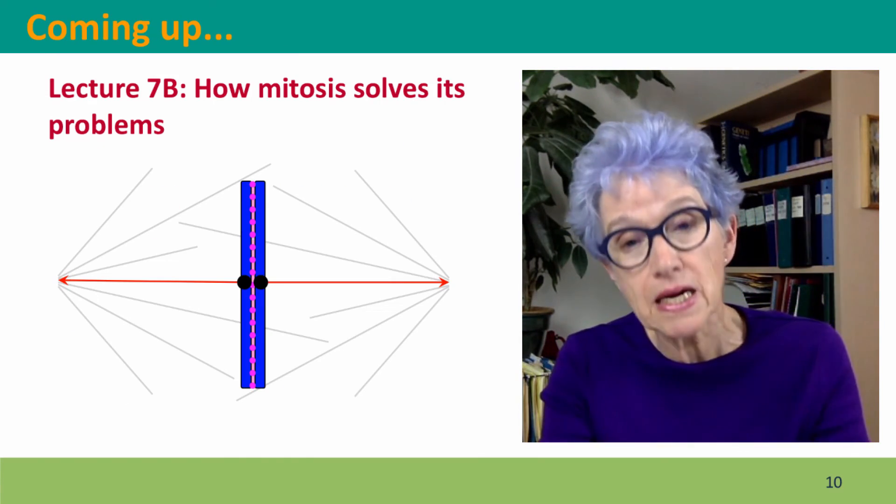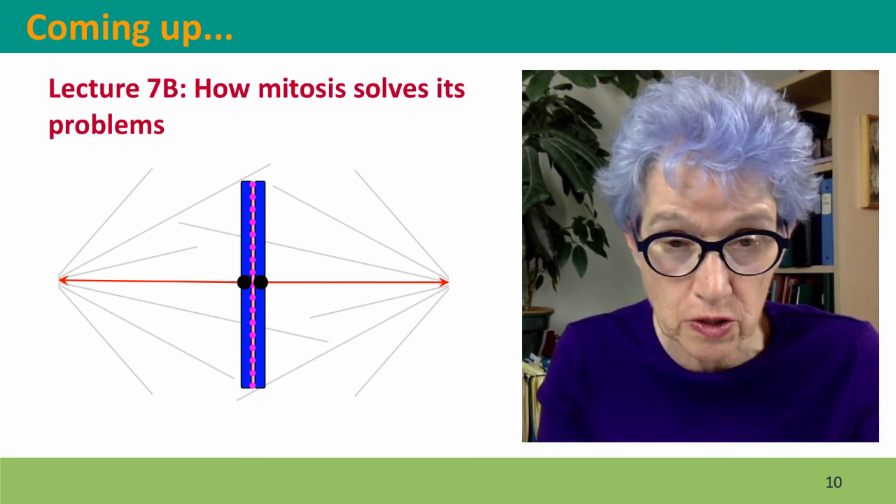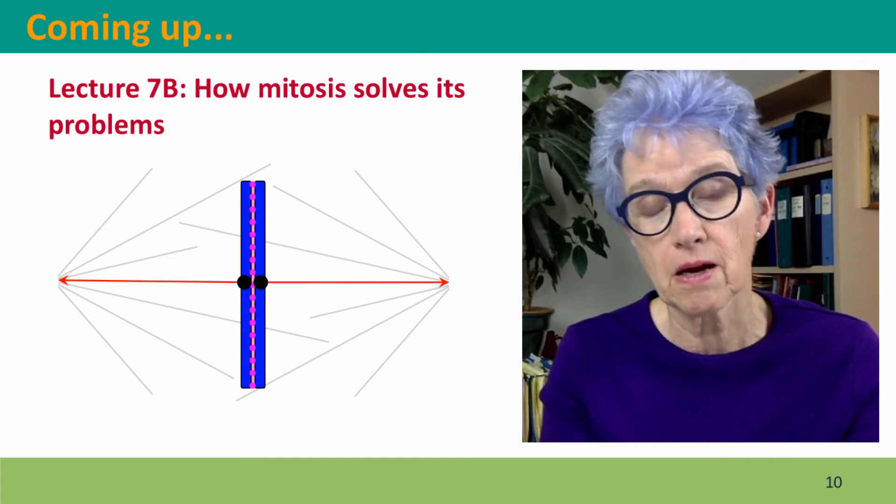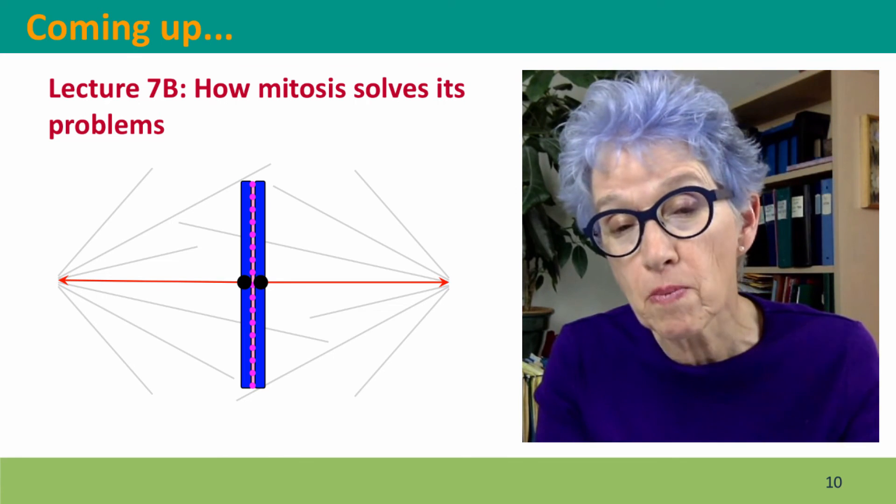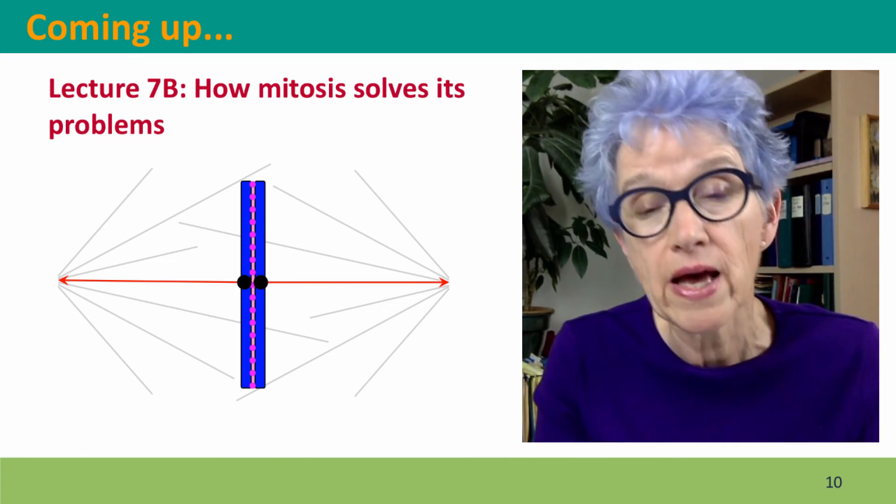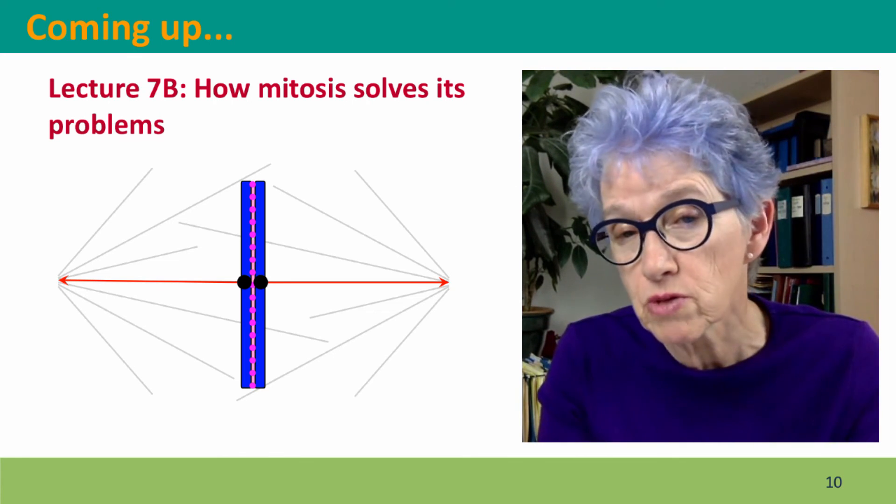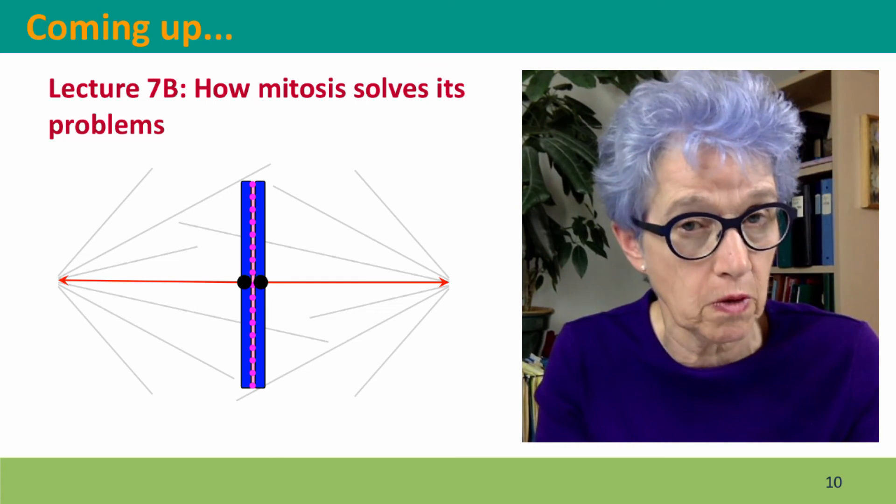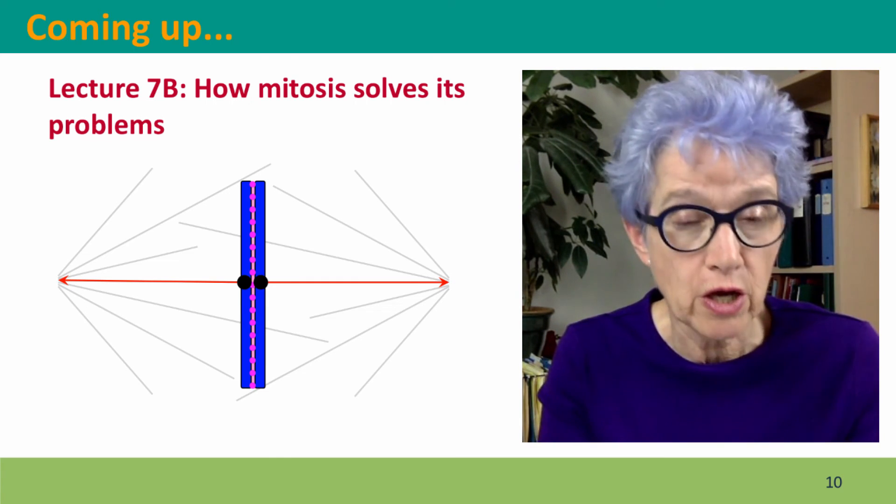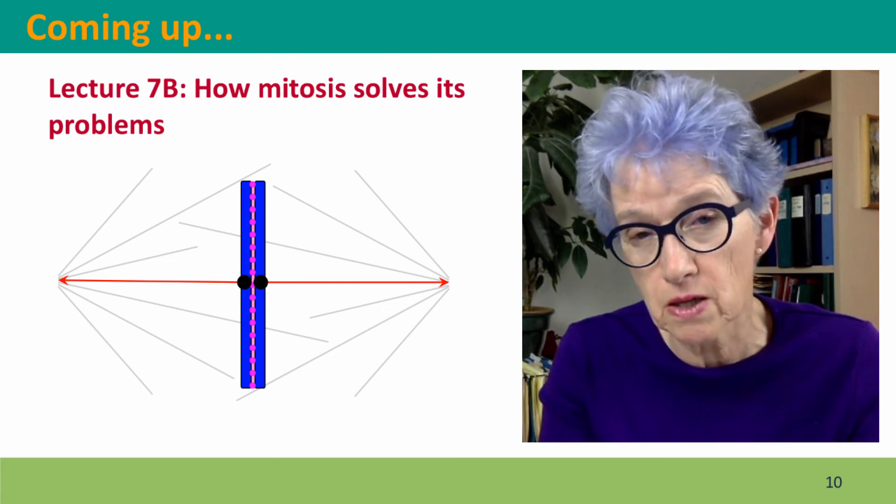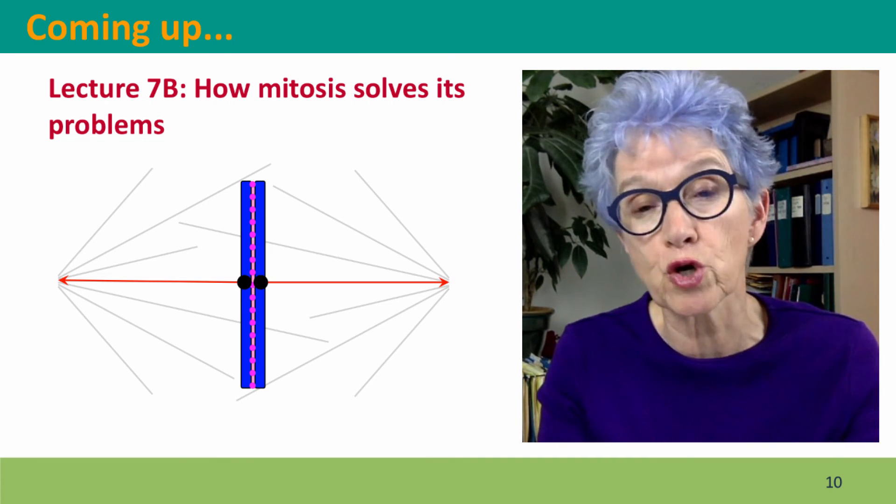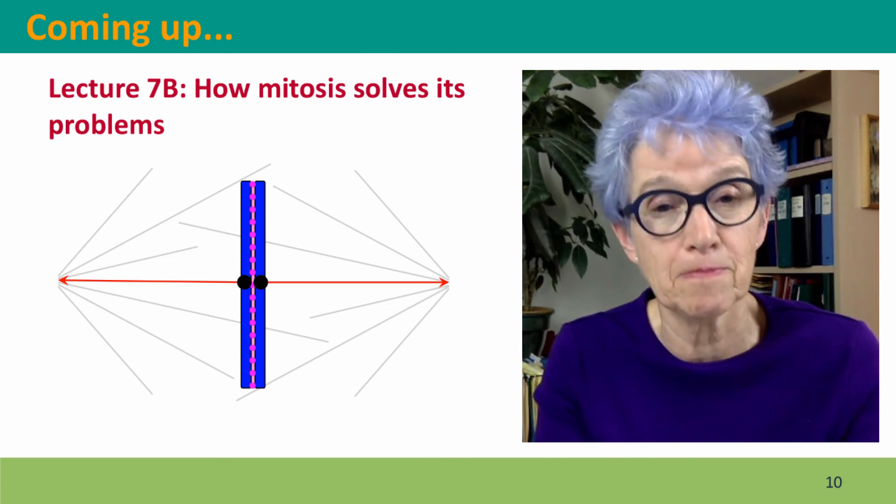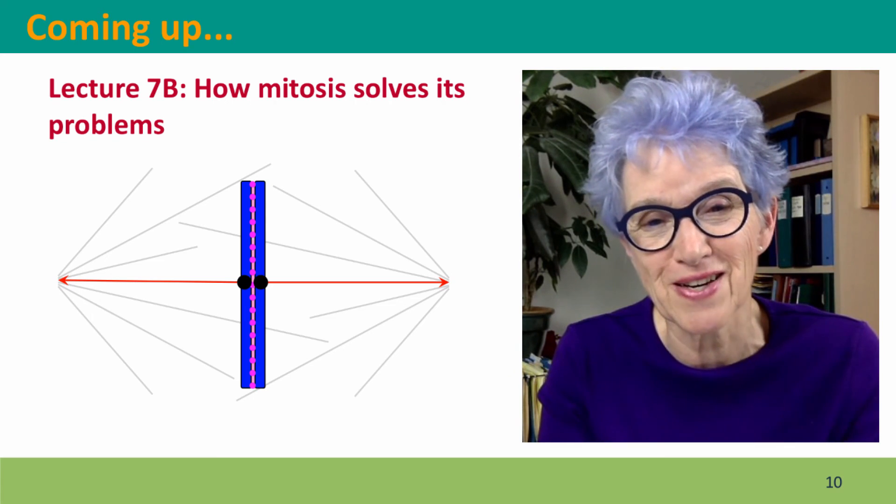Coming up next, we're going to see how this happens. We're going to view mitosis as a problem that the cell has to solve. And we're going to see what are the tricks it uses to solve its problems. This will prepare us to then think about how mitosis solves more complicated problems using basically the same machinery. I hope to see you there.